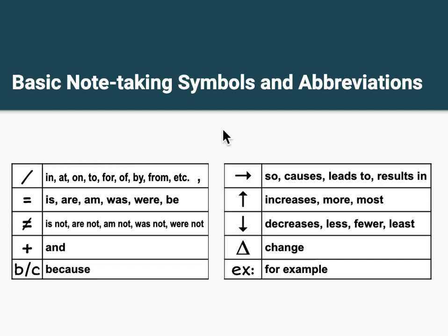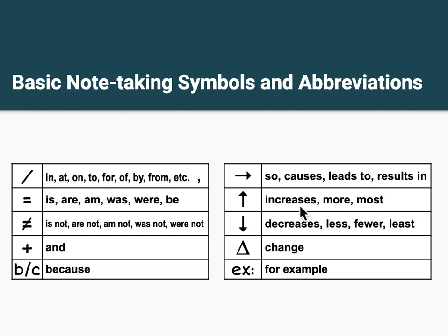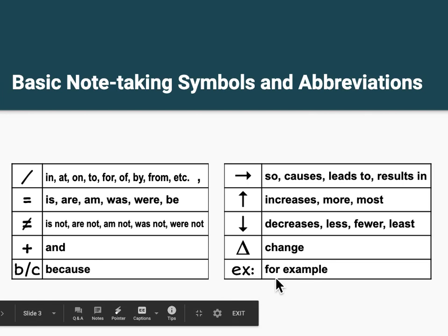Here are some symbols we can use. We can use a backslash to represent prepositions like in, at, on, or commas. We can use the equal sign to represent is, are, am — the be verb in different forms. We can use an equal sign with a slash through it for the negative form: is not, are not, am not. We can use the plus sign for 'and,' the backslash C for 'because,' an arrow pointing to the side for 'so/causes/leads to/results in,' an arrow pointing up for 'increases/more/most,' an arrow pointing down for 'decreases/less/fewer/least,' a delta or triangle for 'change,' and finally, 'ex:' with a colon for 'example.'